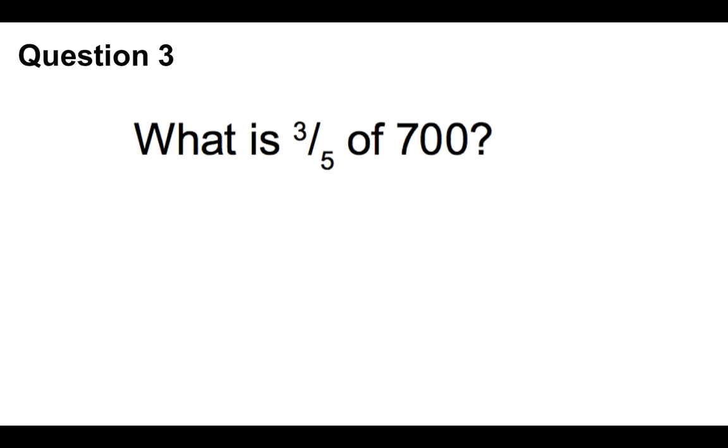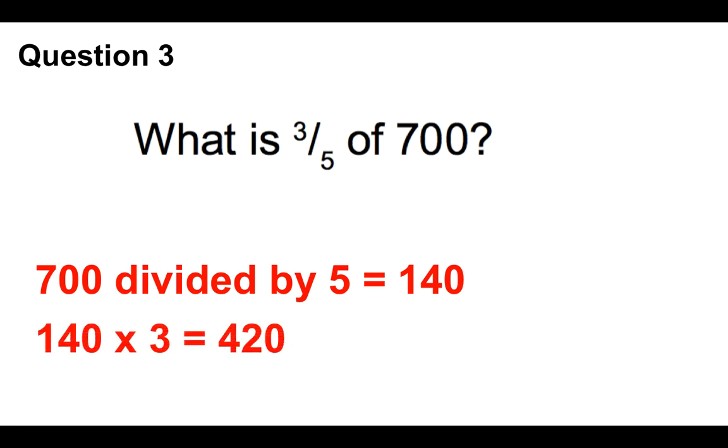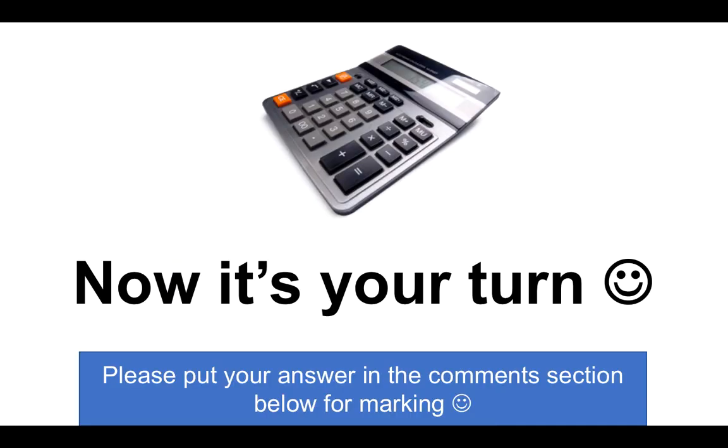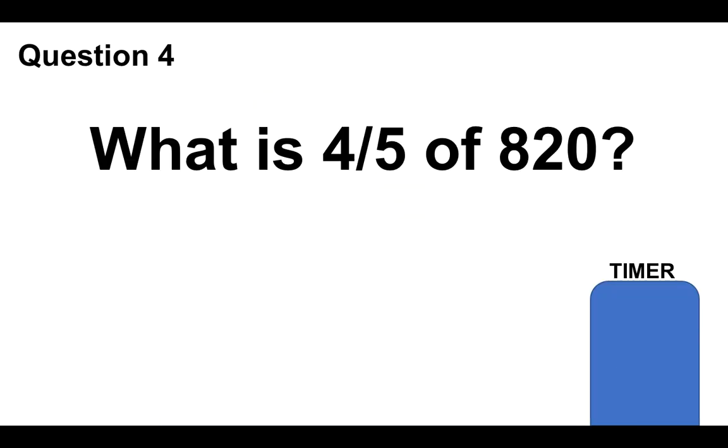Question number three: What is three fifths of 700? The way to work this out quickly is simply 700 divided by 5 for the whole of the fifths, and that equals 140, and then multiply 140 by 3 to get the answer of 420. Now you can use a calculator if you want to for the remaining questions. Again, now it's your turn. If you need to use a calculator, you can. Please put your answer in the comments section below. Question number four: What is four fifths of 820? You've got the time it takes the timer to come down to put your answer in the comments section below. Just use the same process that I've used before. If you're finding it tough or don't have enough time, please just pause the video and work through it because it's important you get the answer correct.